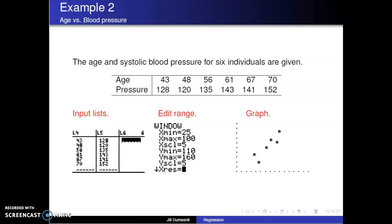For our second example, let's consider the age and systolic blood pressure measurements given for six individuals. If these variables are related, age should be the explanatory variable and blood pressure should be the response variable.